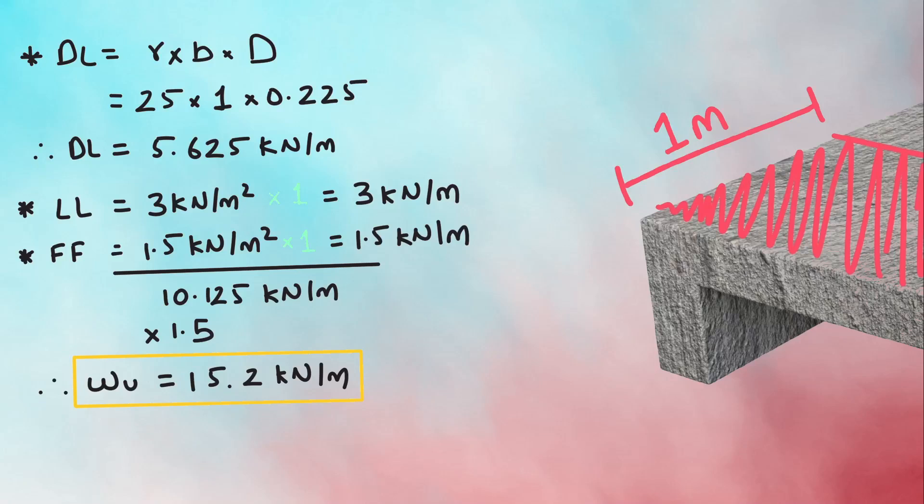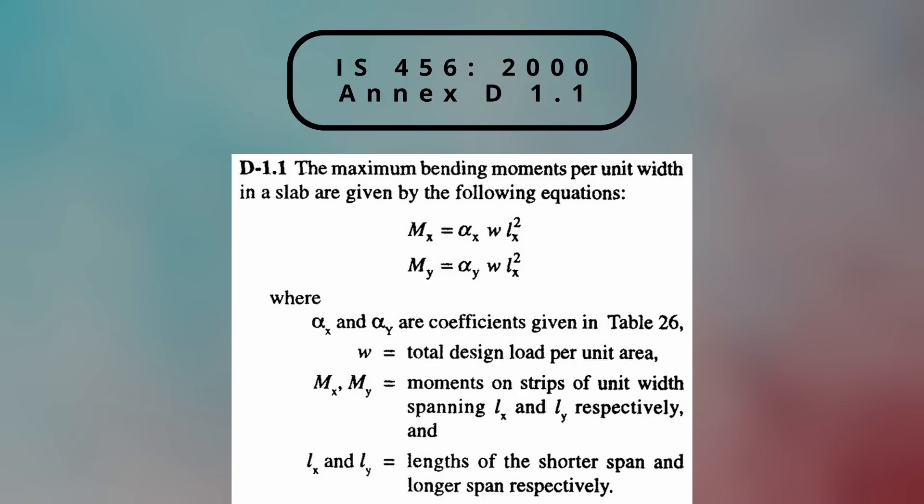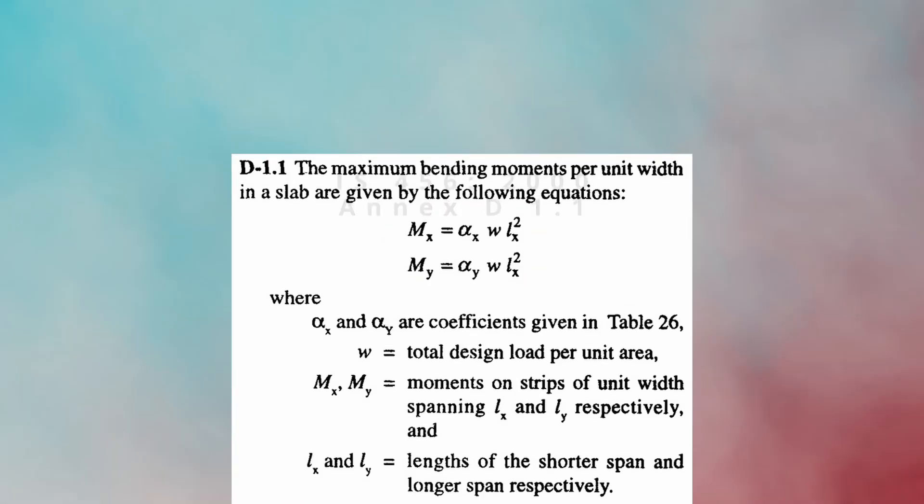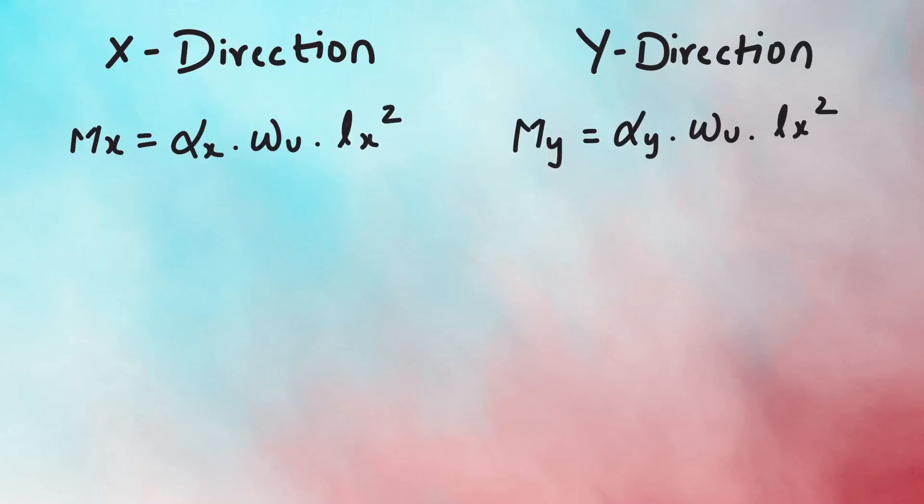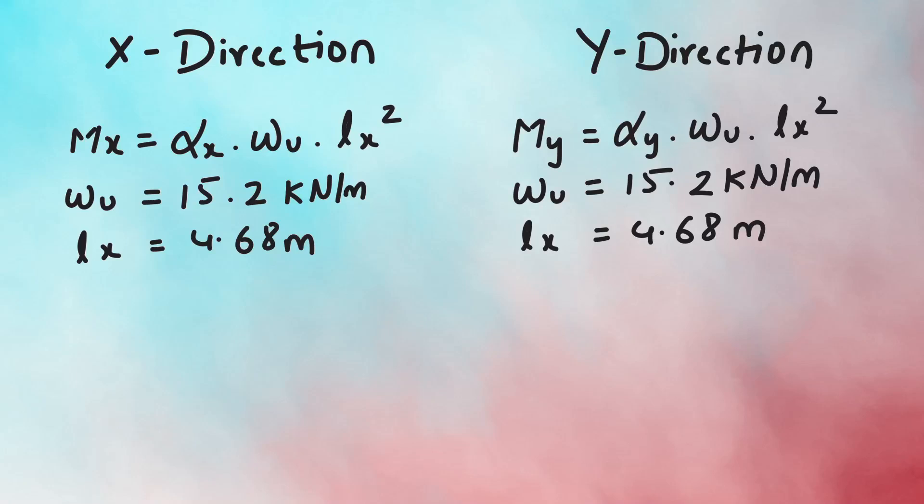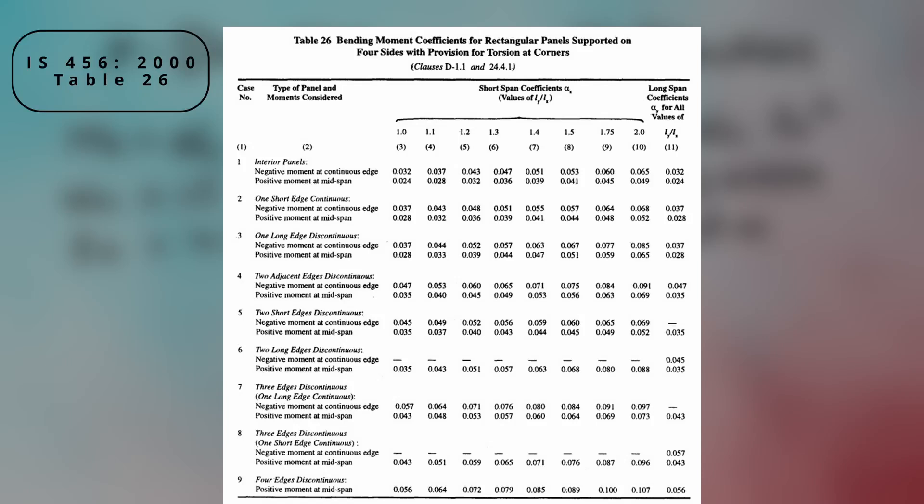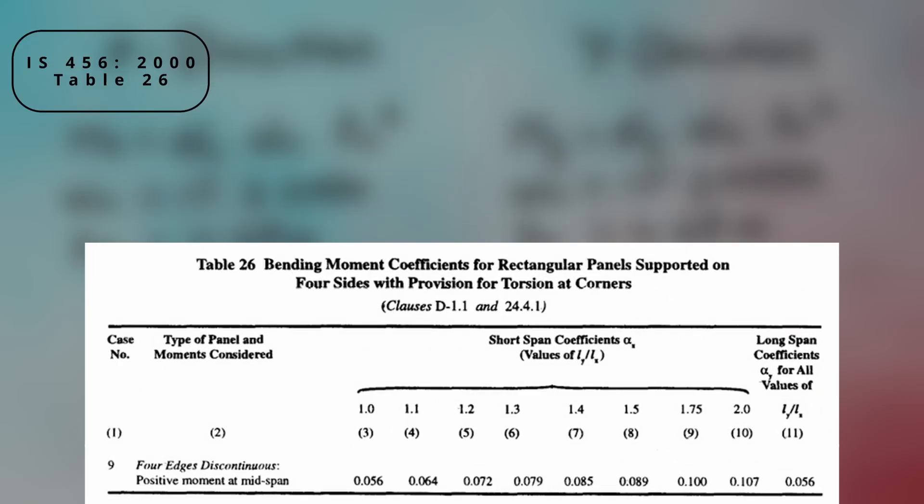Now, to calculate the moment, we have to refer to Annex G 1.1, which gives moment formula for X and Y direction as follows. One thing to note is that both formulas use Lx for their calculation. So here, W is the design UDL, Lx is the effective length in X direction, and alpha Y and X are calculated from table 26 of IS 456-2000. This table shows the values of alpha X and alpha Y for different types of panels and moments considered. Presently, we will assume it is case number 9, that is 4 edges discontinuous. If you want a dedicated video explaining each case in detail, click yes here. And if enough people have clicked yes, you will find a video instead.